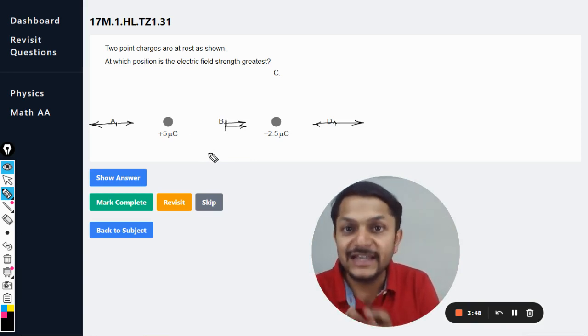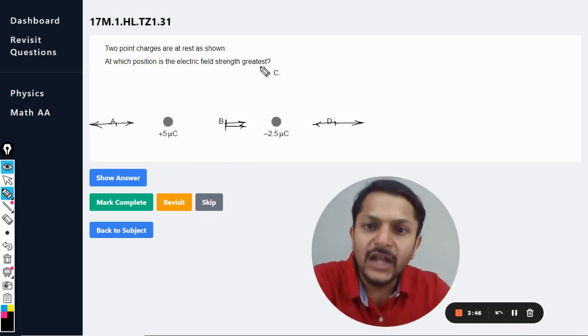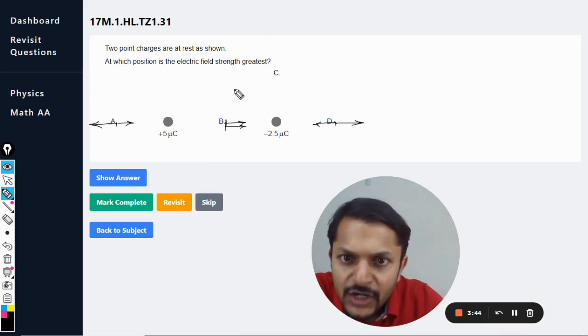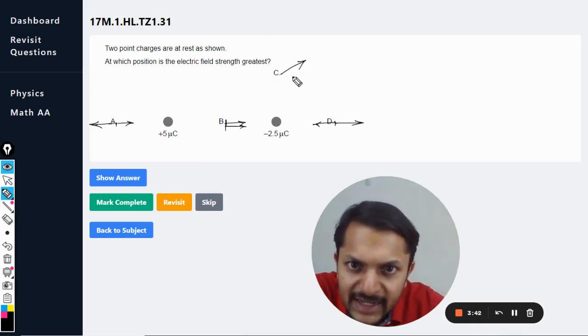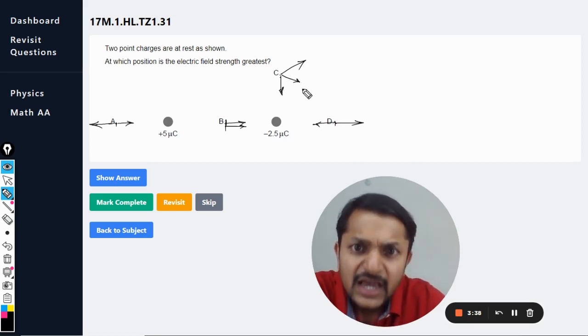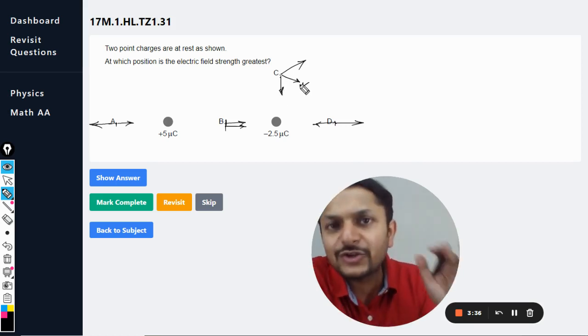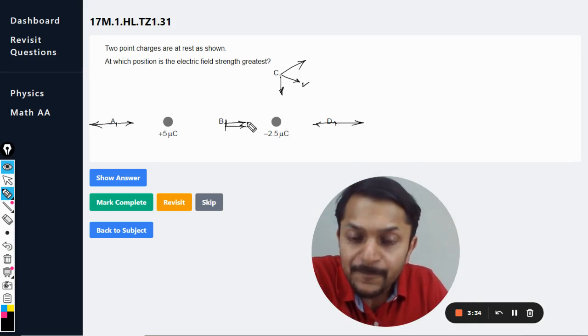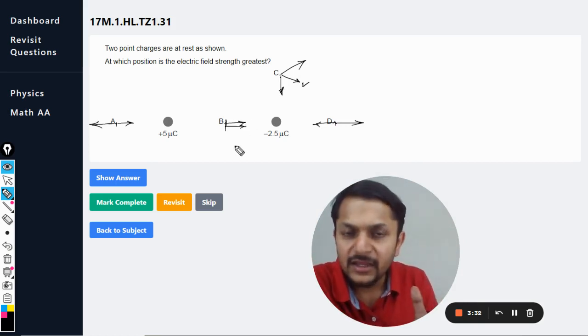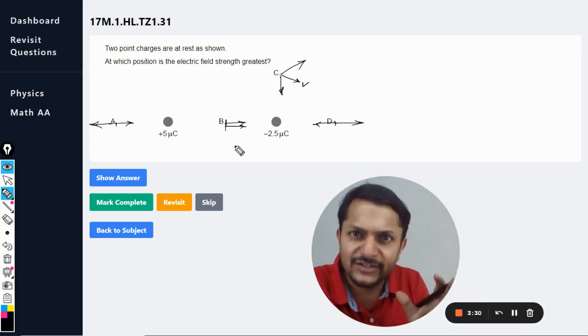Now when we talk about C, the positive charge would be repelling, negative charge would be attracting. So there will be some resultant of this. Definitely it is not going to be greater than the electric field that B has, because it will be somewhat lesser. Some components of the electric field will be canceling each other.